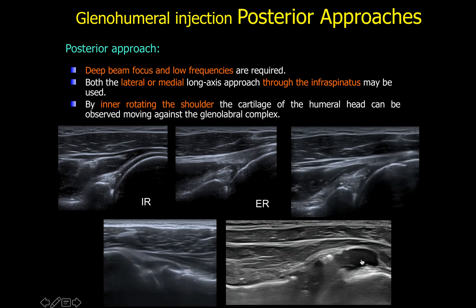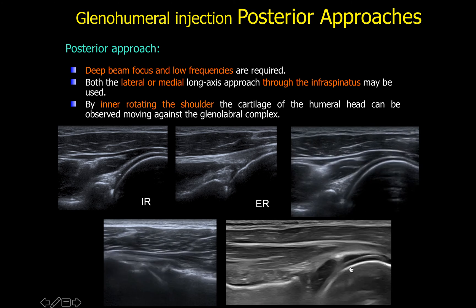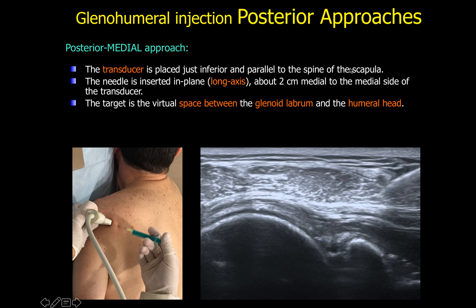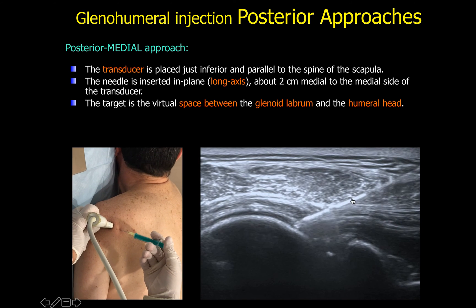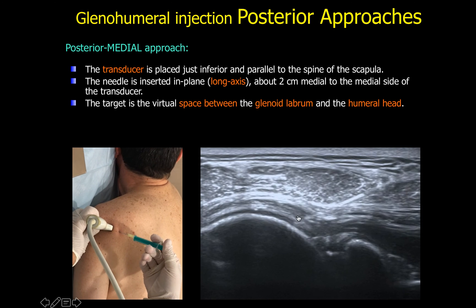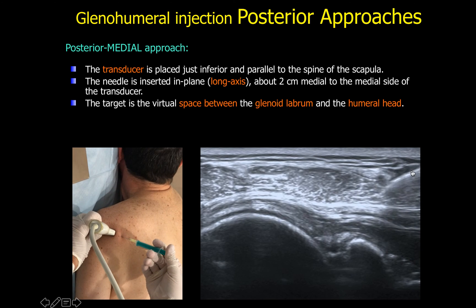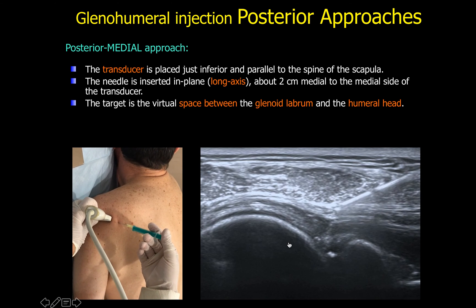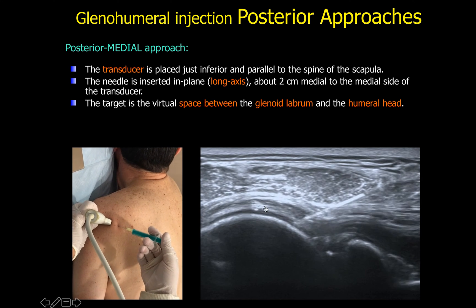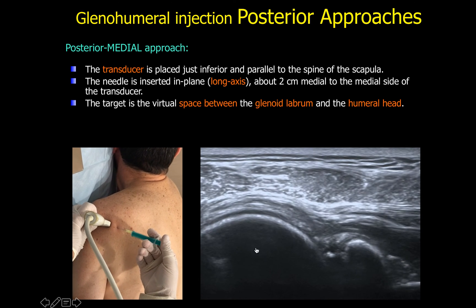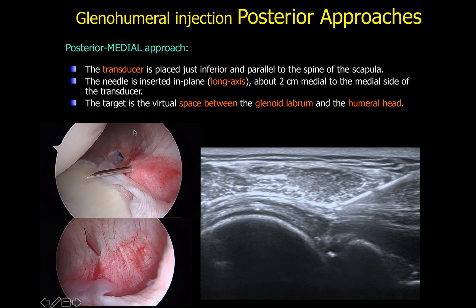When cartilage is clearly visible on ultrasound, you are over the joint space and beneath the infraspinatus tendon. The posterior medial approach is the most commonly used technique; targeting the space between the labrum and the humeral head, the needle is directed very perpendicular to the humeral head, and reaching the cartilage confirms you are inside the joint and through the capsule.